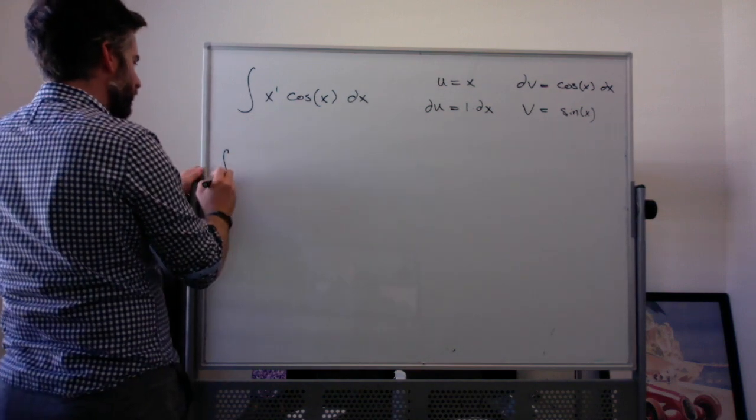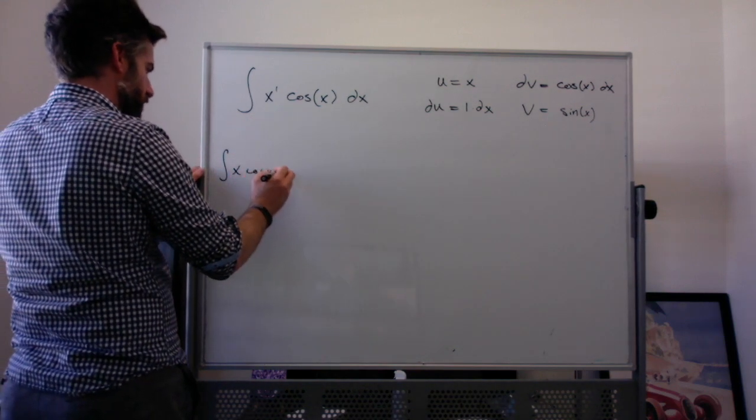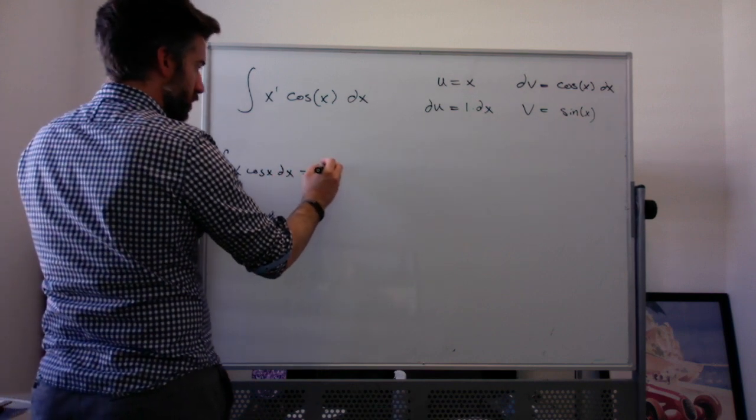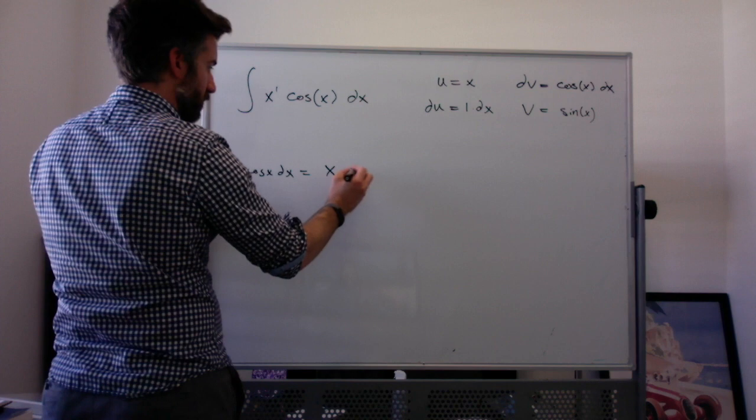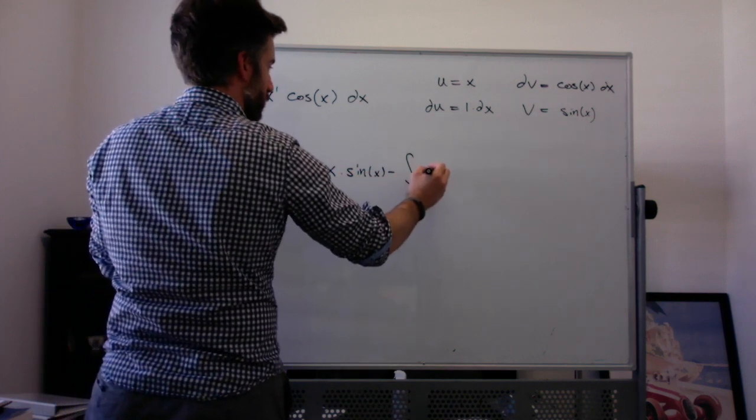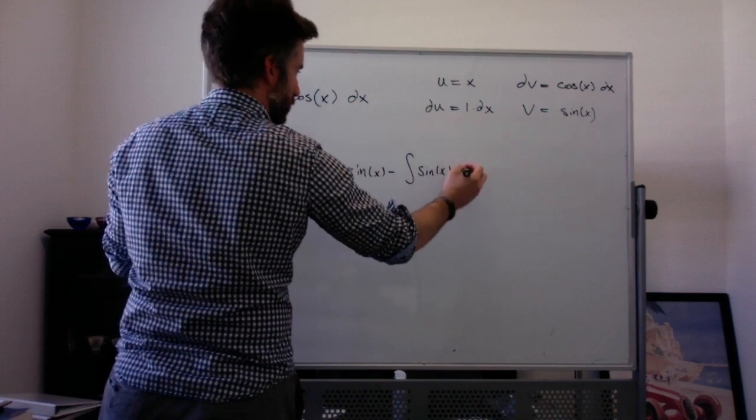So rewriting my integral, and I often like to actually write the integral again. So the integral of x times cosine of x dx is u, which is x, times v, which is sine of x, minus the integral of v, sine of x, du, which is just dx.